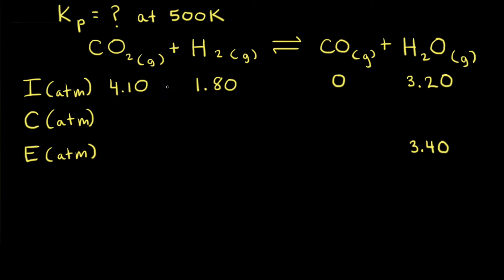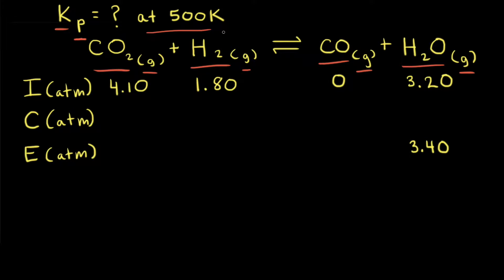Let's calculate the equilibrium constant for another reaction. In this reaction, carbon dioxide reacts with hydrogen gas to produce carbon monoxide and H2O. Since everything is in the gaseous state, it's easier to work with partial pressures than concentrations. So instead of calculating Kc, we're going to calculate Kp, where P stands for pressure. We're trying to find Kp at 500 Kelvin, and we'll use an ICE table, where I is initial partial pressure in atmospheres, C is the change, and E is the equilibrium partial pressure.